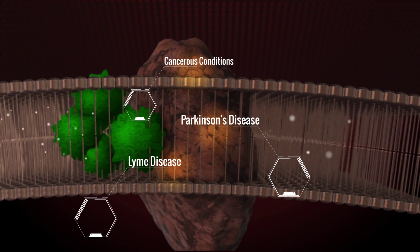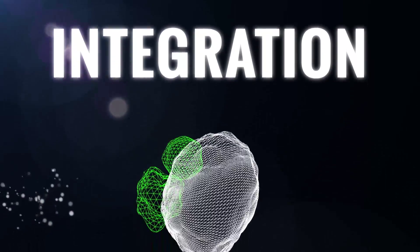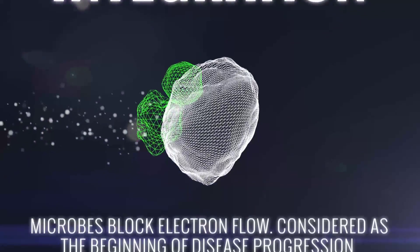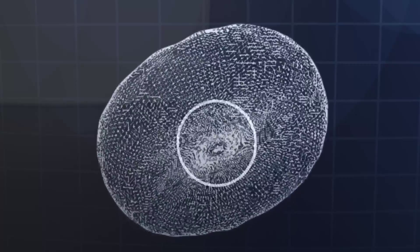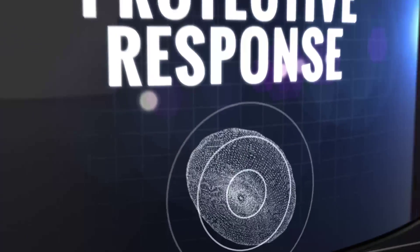In summary, integration involves the microbe or toxin blocking electron flow and could be viewed as the initiating factor in disease progression. When integration occurs, a protective response is activated within the cell.